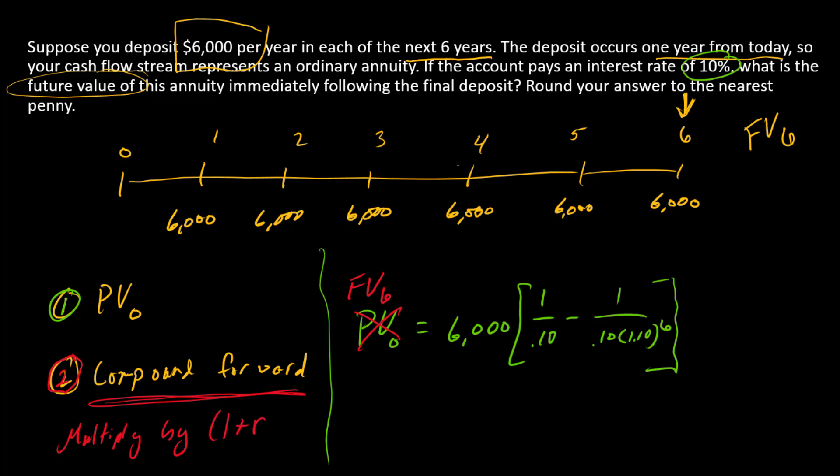We're going to multiply by one plus r to some power. Here the r is 10% and the n is six. I'm just going to take whatever this green term is and then multiply by 1.10 raised to the sixth power.